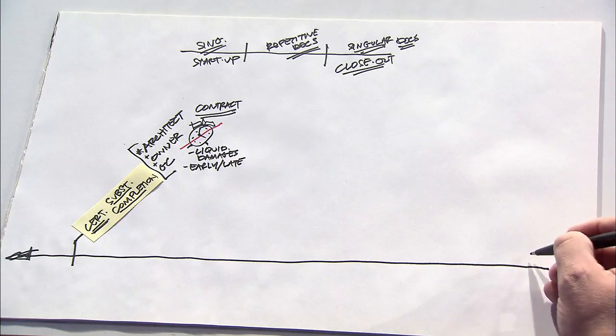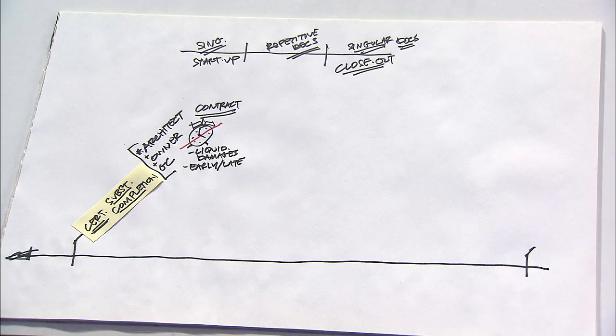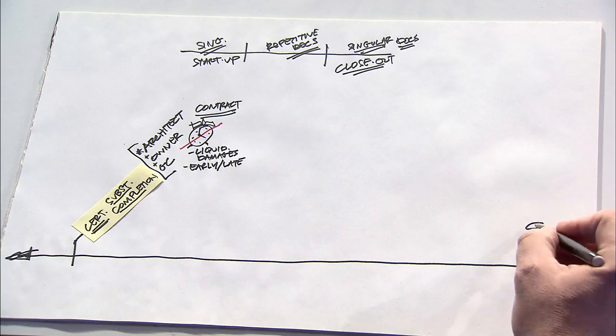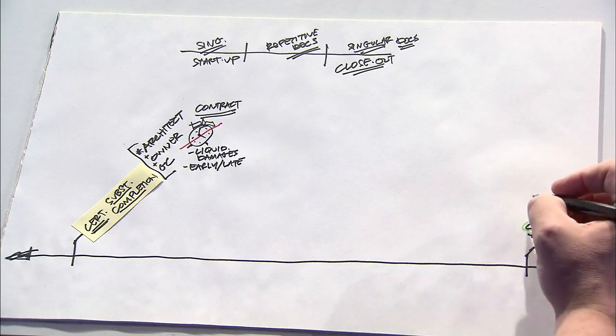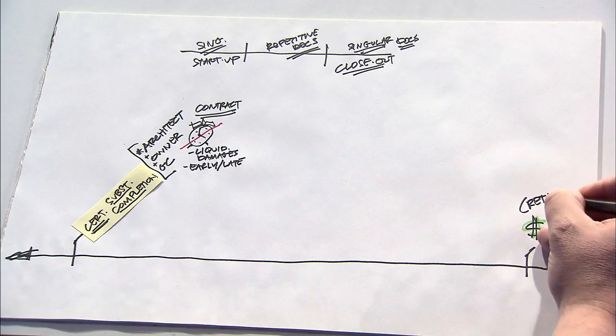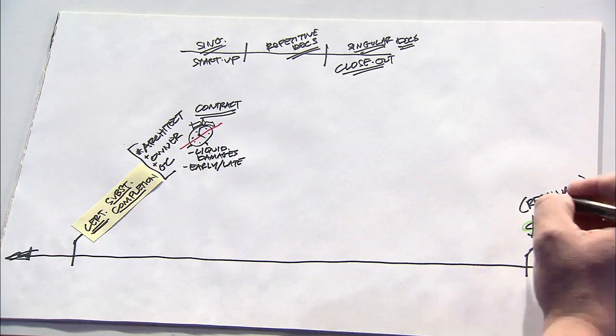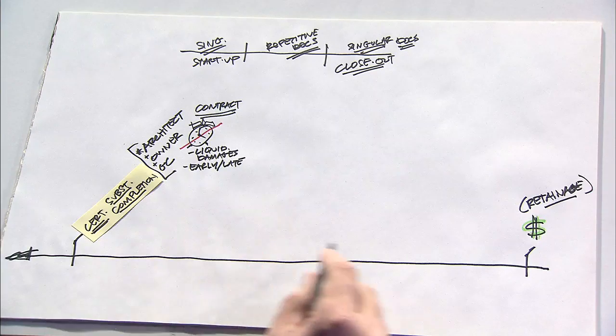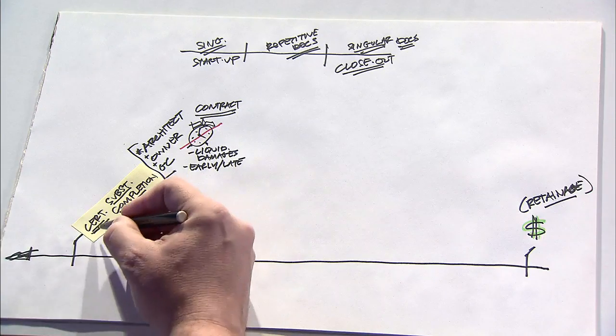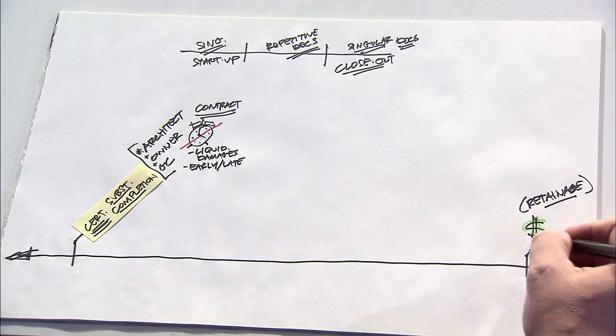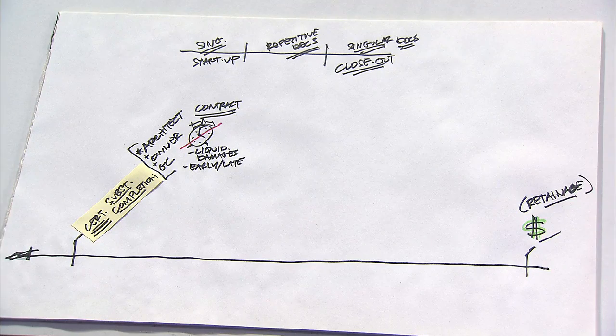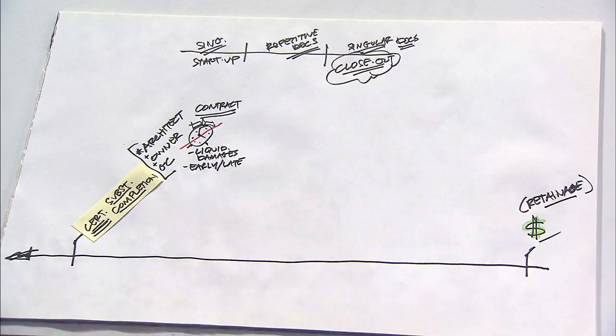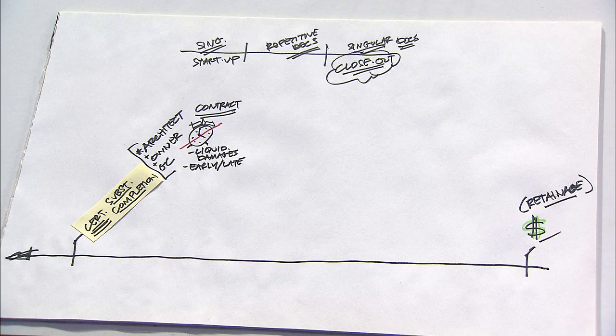Now I'm going to skip ahead to basically the last thing that happens on most any project, and that is the receipt of the last dollar by the contractor. And typically, this last dollar represents the retainage that was being withheld based on the contract terms. Now, we'll populate this space in between the Certificate of Substantial Completion and the release of the retainage dollars. There are a lot of very important closeout documents that have to be issued in that time frame to close out the job appropriately.